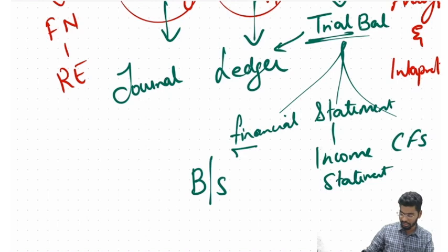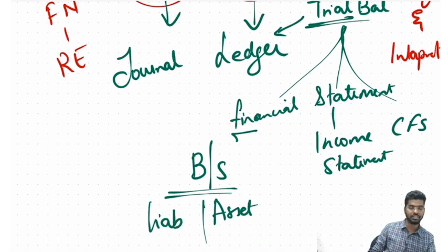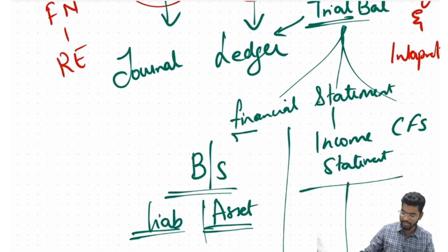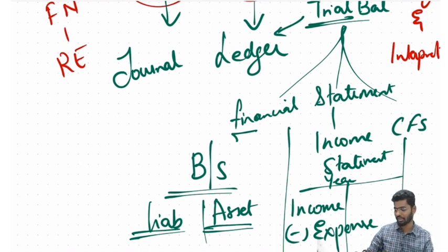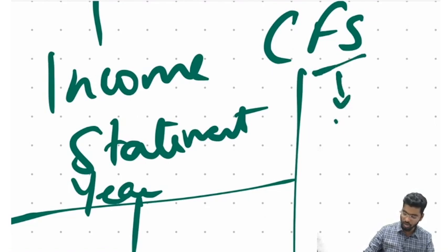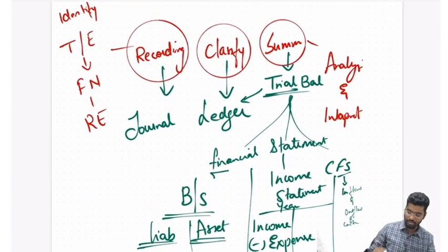A balance sheet tells me on a particular day what my assets and liabilities are. An income statement tells me for a particular year what my income less expenses are — how much income and how much expense. A cash flow statement talks about what is my inflow and outflow of cash.